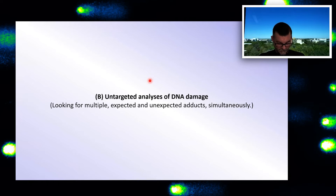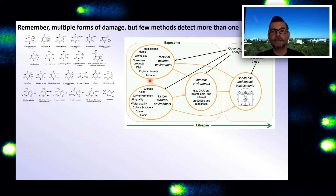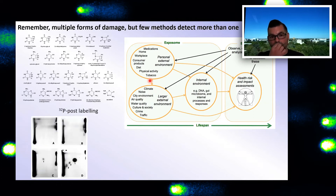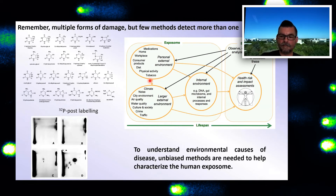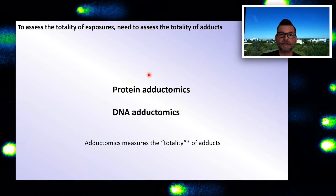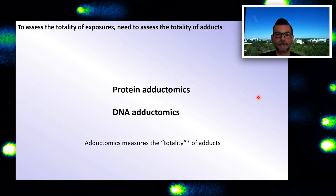Moving on to untargeted analyses of DNA damage — these approaches look for multiple expected and unexpected adducts simultaneously. There are multiple forms of damage, but few methods detect more than one. We need to look at multiple forms because there are multiple exposures and there's a link between the two. P32 post-labelling was popular at one point and offered the potential to look at more than one product, but it doesn't have the power of adductomics. We need unbiased methods to help characterize the human exposome, which is where adductomics was born — initially protein adductomics, then DNA adductomics. The omics suffix refers to the measurement of the totality of adducts.